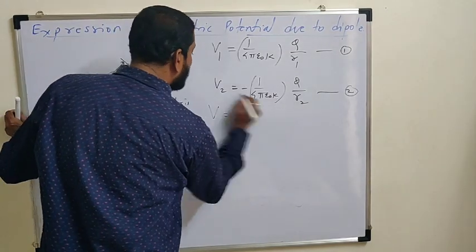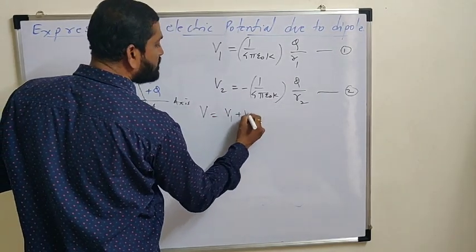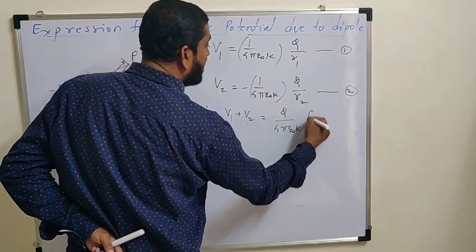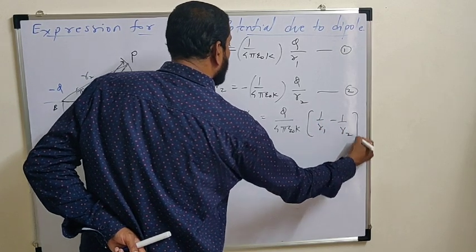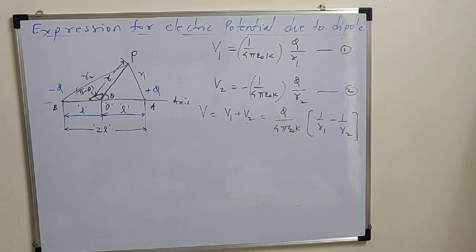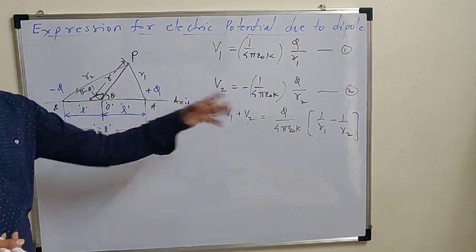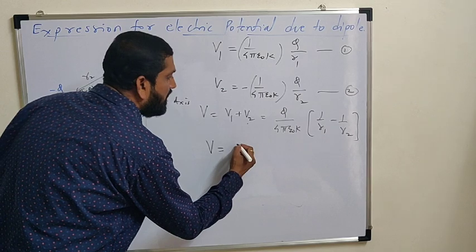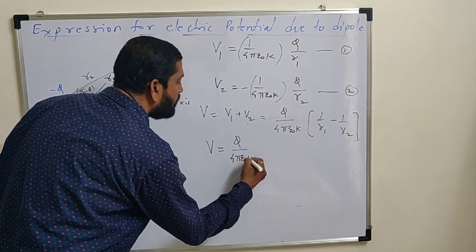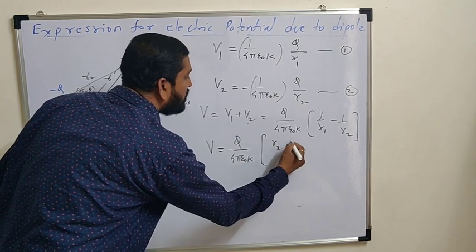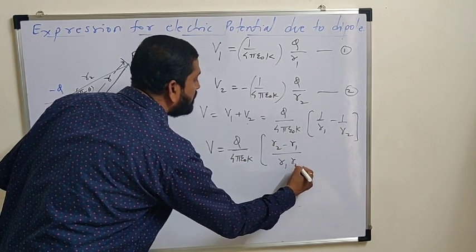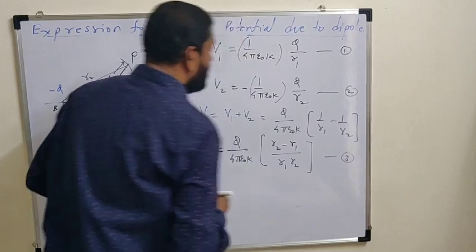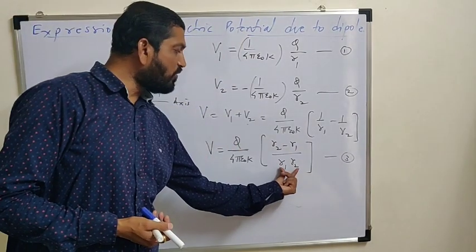Therefore, total potential V = V1 + V2 will be equal to, take common Q and 4πε₀ common. In bracket, it will be 1/R1 - 1/R2. Very important. We have to modify this formula. We can write V = (Q/4πε₀) in bracket (R2 - R1)/(R1×R2). This is very important. Equation number 3. Now we have to find R2 - R1 and R1×R2, this product.